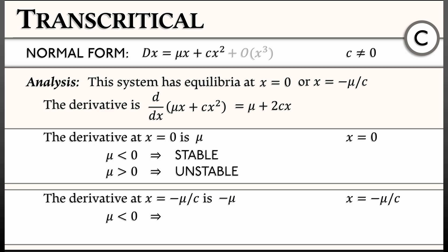That means that when mu is negative, this second equilibrium is unstable, and when mu is positive, this second equilibrium is stable. Now, we notice from the stability analysis that things seem to flip. These two equilibria always have opposite stability. That kind of makes sense.